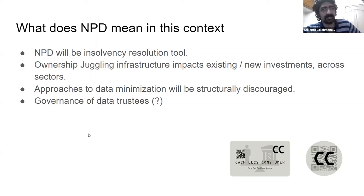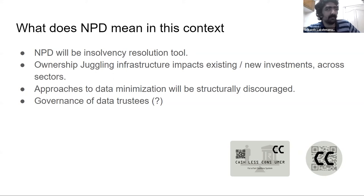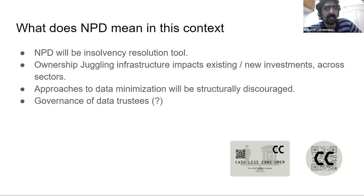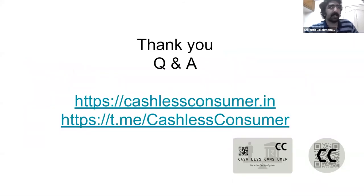The other issue is around the governance of data trustees. The NPD framework mentions data trustees, but what are the governance norms — the transparency and accountability provisions — and how does that impact individuals and businesses? That is something to worry about. And that is all I have. Thank you.